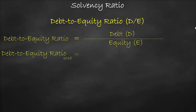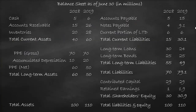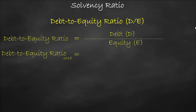Let's calculate the debt-to-equity ratio for the year 2018. Total liabilities is equal to $70 million, which we get from the balance sheet, divided by total equity, which is $30 million, which we also get from the balance sheet, which is equal to 2.33 times.